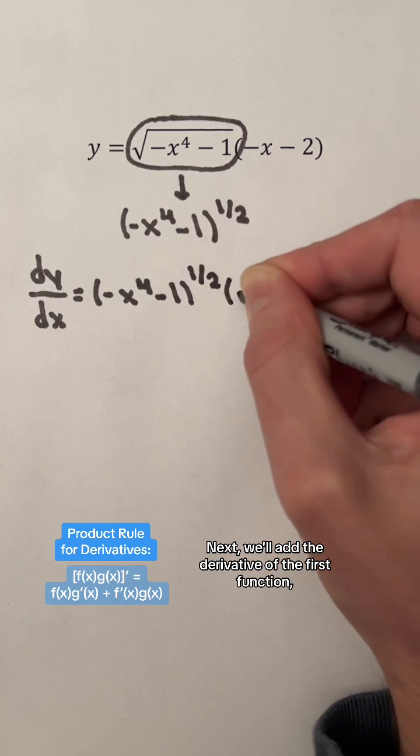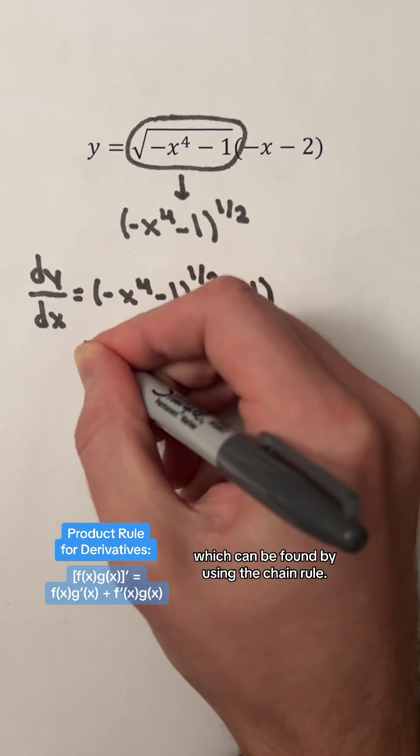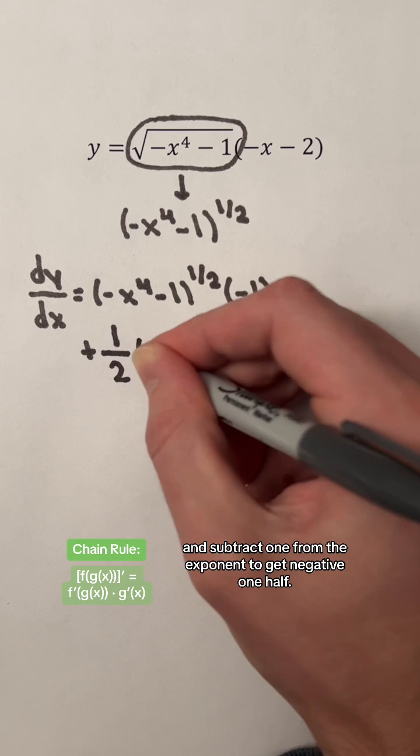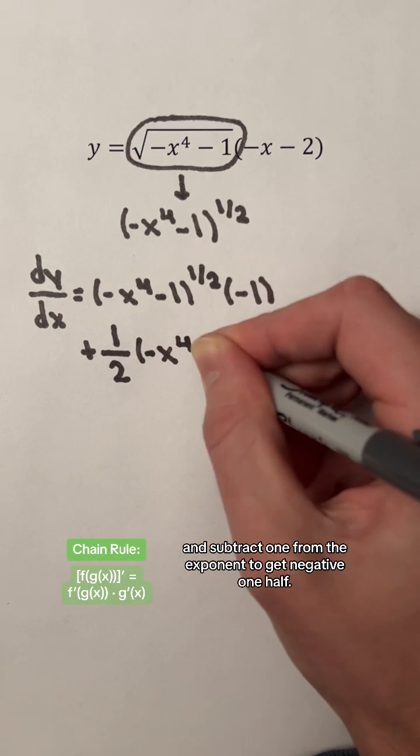Next, we'll add the derivative of the first function, which can be found by using the chain rule. We'll bring down the exponent of one-half and subtract 1 from the exponent to get negative one-half.